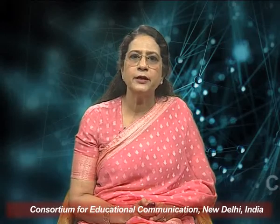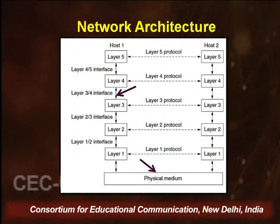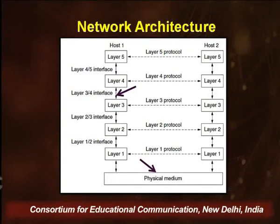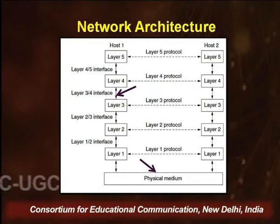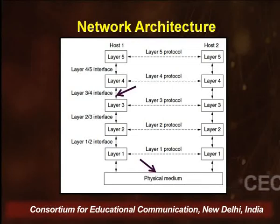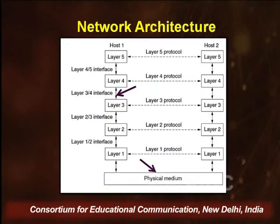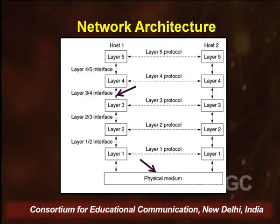Interfaces are where abstraction is provided — they distinctly separate the functionalities of adjacent layers. Each layer makes an interface with the layer below it, and middle layers interface with both the layer above and below. For example, between layer 4 and layer 5 it is called the layer 4/5 interface, and between layer 3 and 4, the layer 3/4 interface. Interfaces are important when designing your architecture.